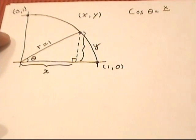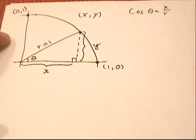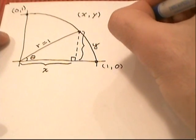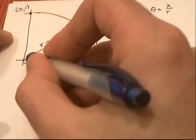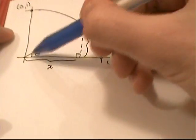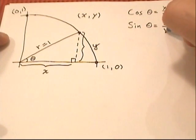over hypotenuse, which in this case is r or 1. We'll keep it as r for now. And sine of theta is always defined as opposite, in this case y, over hypotenuse, which is r, so y over r.